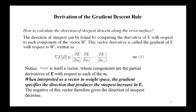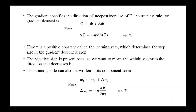When interpreted as a vector in weight space, the gradient specifies the direction that produces the steepest increase in capital E. The negative of this vector therefore gives the direction of steepest decrease. Since the gradient specifies the direction of steepest increase of capital E, the training rule for gradient descent uses the negative of this gradient.